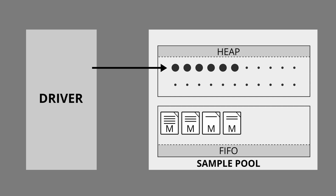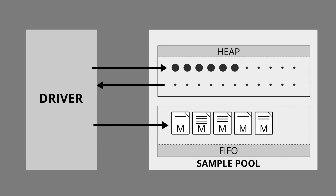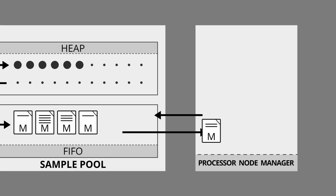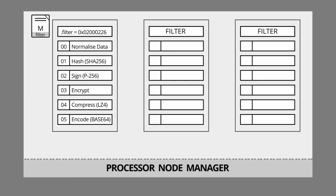The driver takes that allocated measurement sample, fills it with specific data, and when it's done populating the measurement sample with the telemetry data, it queues that measurement in the sample pool's FIFO buffer. At this point the processor node manager comes into play, asynchronously checking the sample pool's FIFO buffer for new measurements. If any measurements are found, it pulls out the oldest measurement from the FIFO and starts to process it by running it through the processor node registry.